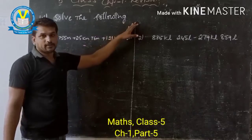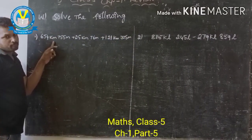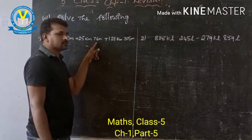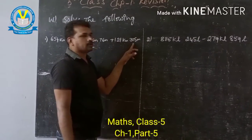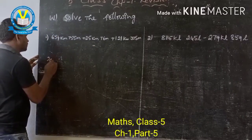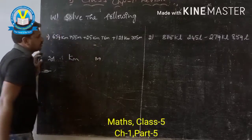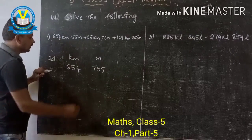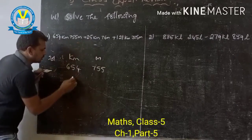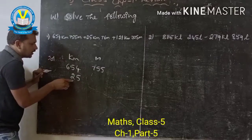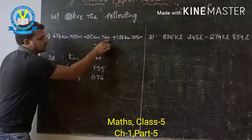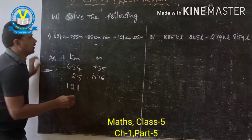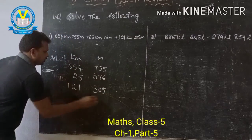Now the next one is solve the following. 654 kilometers 755 meters, plus 45 kilometers 76 meters, plus 121 kilometers 305 meters — this is an addition. First, look at 654 kilometers and 755 meters, 45 kilometers and 76 meters, and 121 kilometers and 75 meters. Now addition.